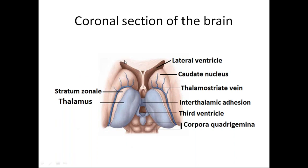In the coronal section, you can see the corpus callosum, septum pellucidum, and lateral ventricle on either side. The caudate nucleus is visible, as is the thalamus. Between the thalamus and caudate nucleus is the thalamostriate vein. The interthalamic adhesion connects the two thalami. The third ventricle is the cavity of the diencephalon. The pineal gland and corpora quadrigemina — consisting of superior and inferior colliculi — are also visible.